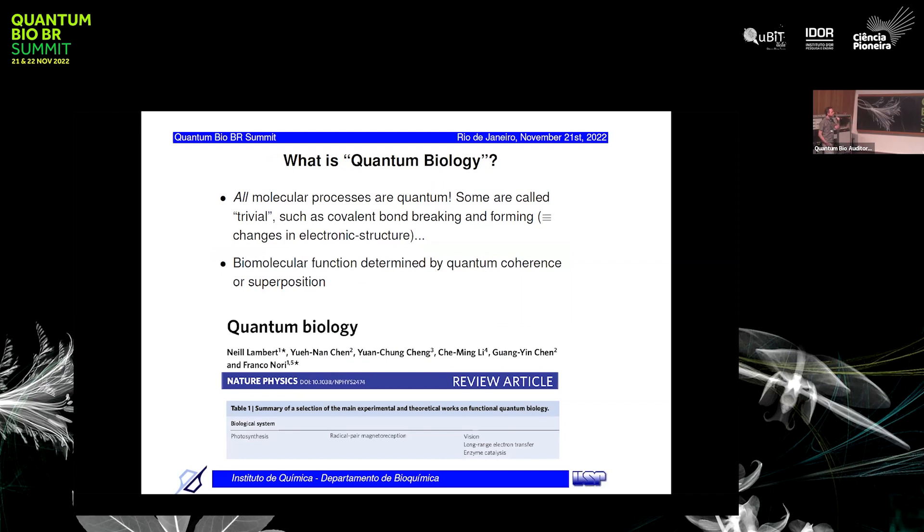So what is quantum biology? All molecular processes are actually quantum processes. Some are what I call trivial processes, such as bond breaking and bond forming. This is not quantum biology. They are just changes in the electronic structure of a molecule. People would say that quantum biology is when a biomolecular function is determined by quantum coherence or quantum superposition.